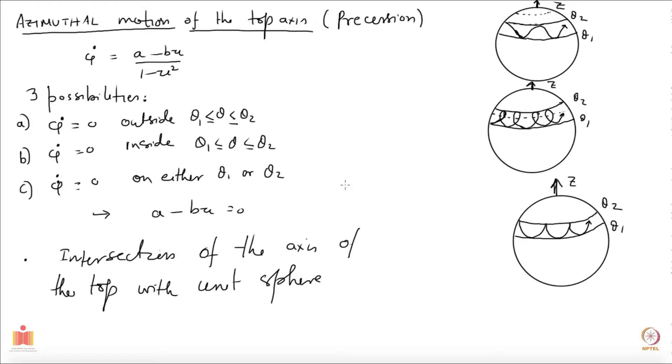If you look at the last possibility where phi dot equals 0 on theta 1 or theta 2, this is a case which happens when you start your top in the following fashion. Let's say this is the vertical and this is the axis of the top. You can imagine bringing an external device which could attach to this axis and make this top rotate about this axis. The top starts spinning about this axis at the fixed angle whatever theta is here.